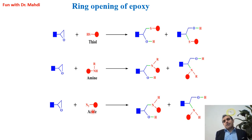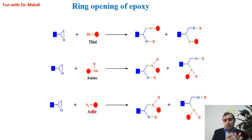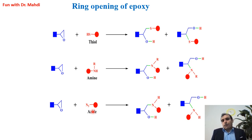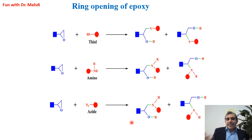Phosphine can convert azide into amine, and once we have amine, we need to use a catalyst — for example, bismuth — and then we will have ring opening.